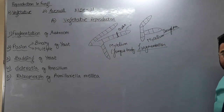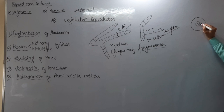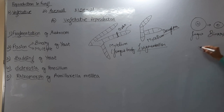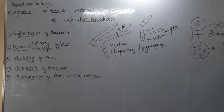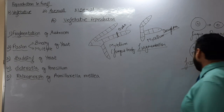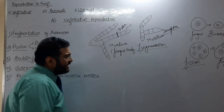The next method is fission. Fission can be binary or multiple, and it is common in unicellular fungi like yeast. If a unicellular fungus divides into two parts, that is called binary fission. If the parent cell forms many small fungal cells inside it, and the main cell ruptures under favorable conditions releasing all new fungi, that condition is called multiple fission.